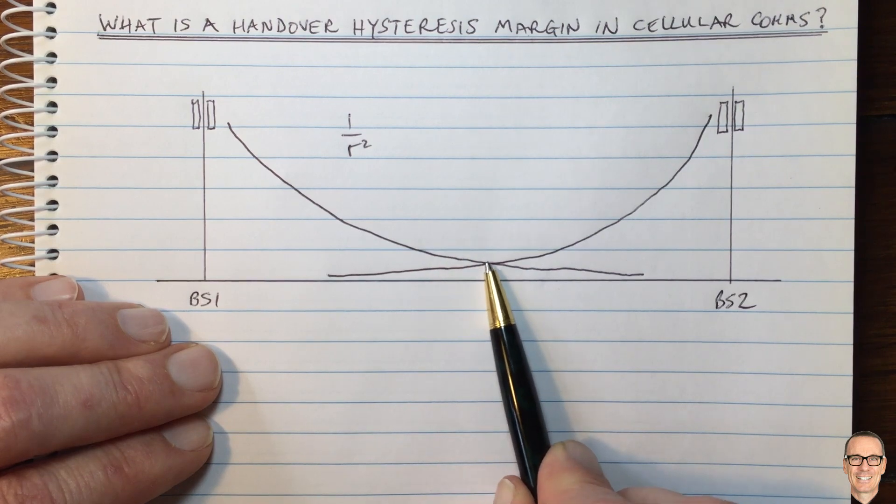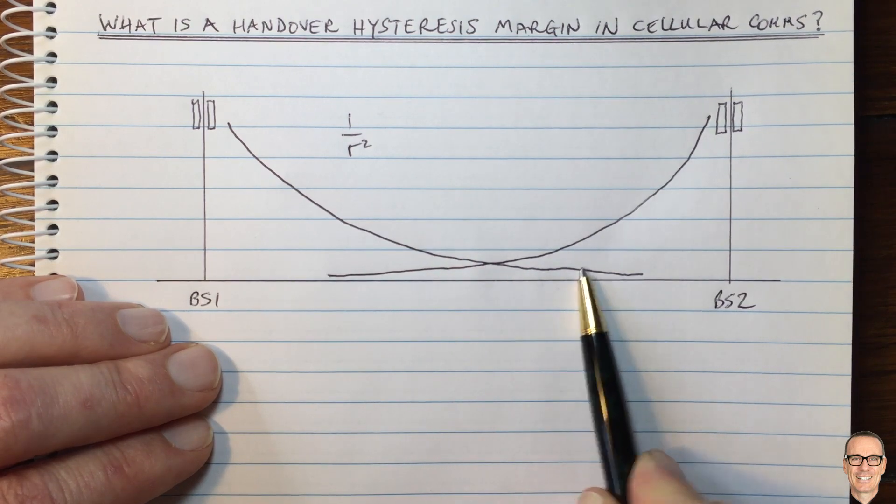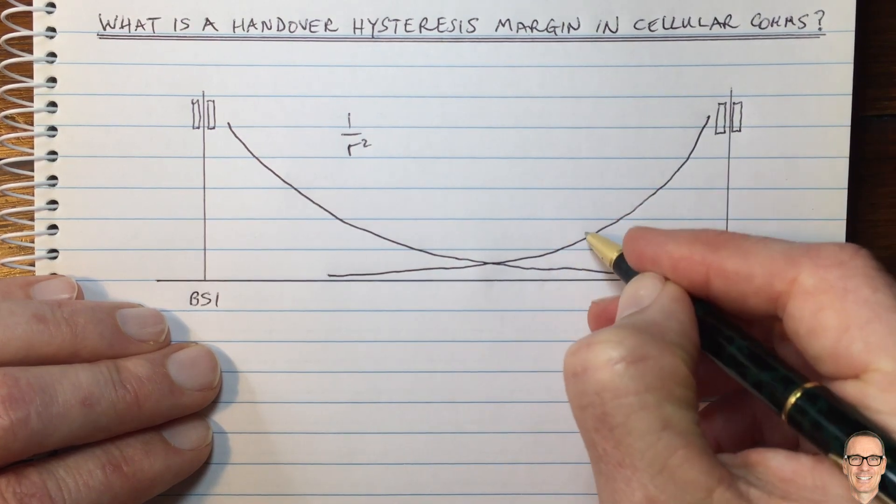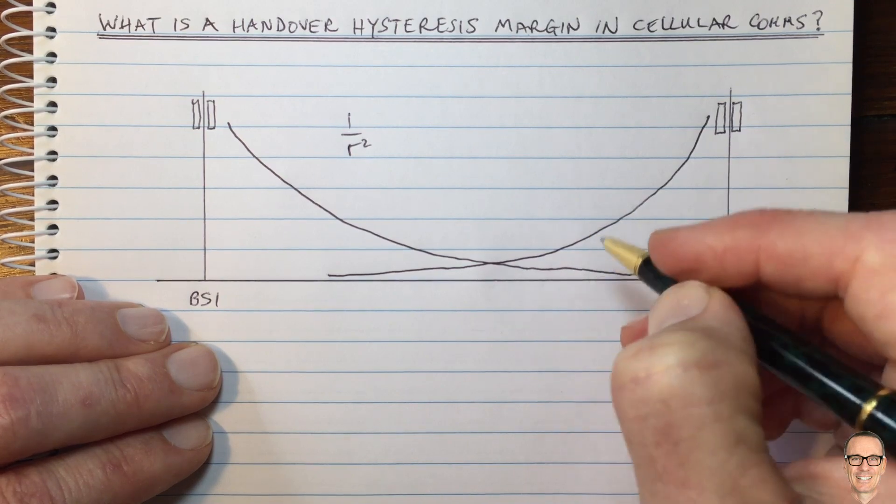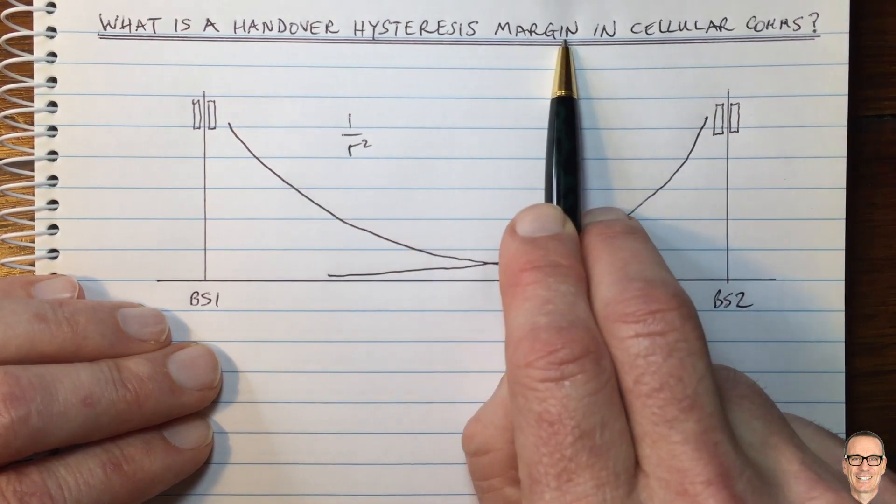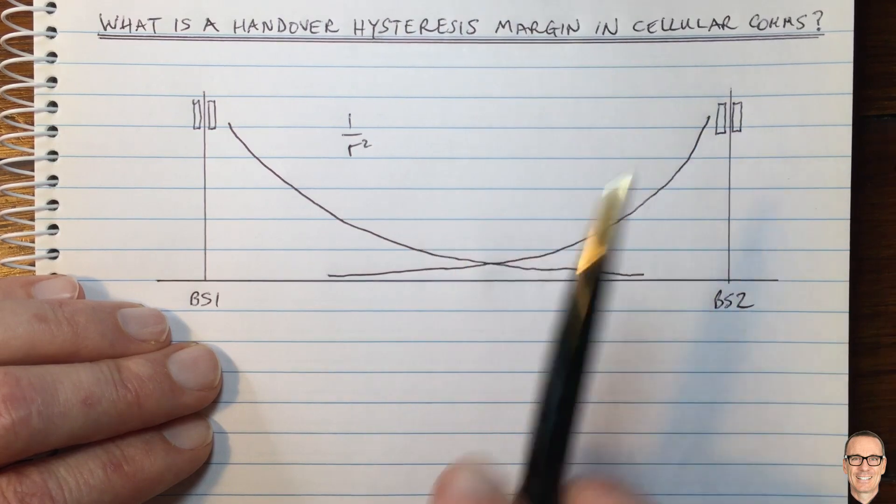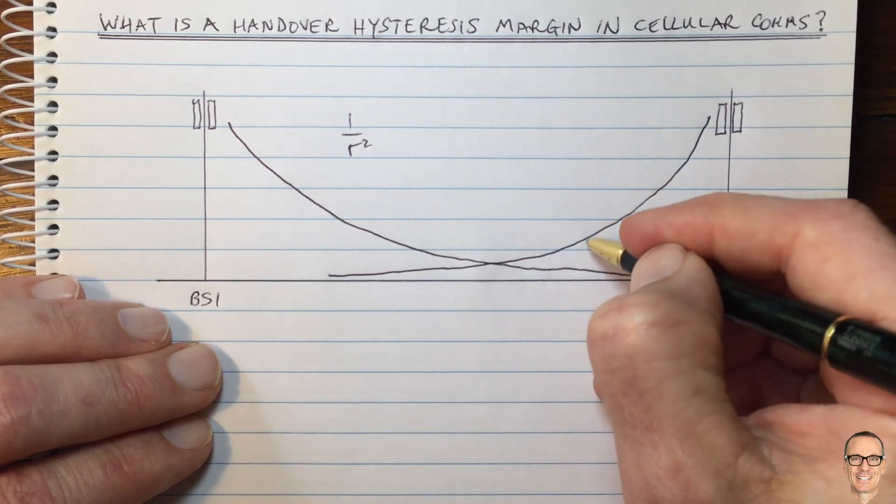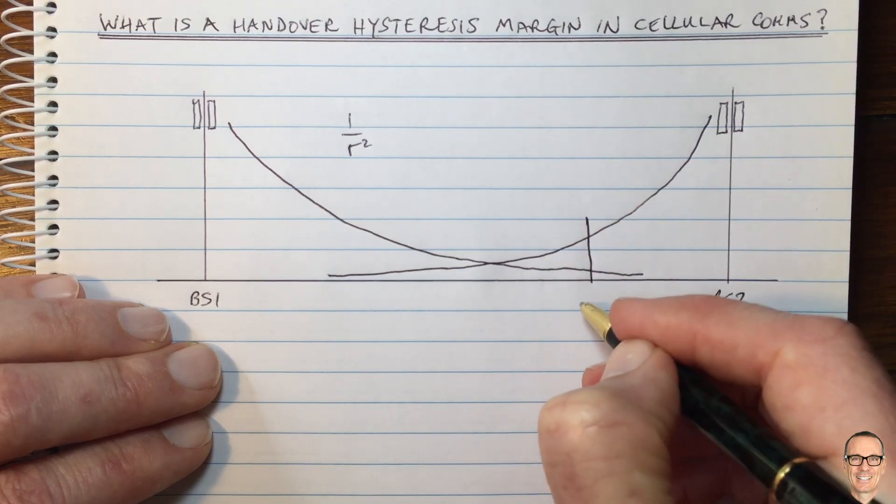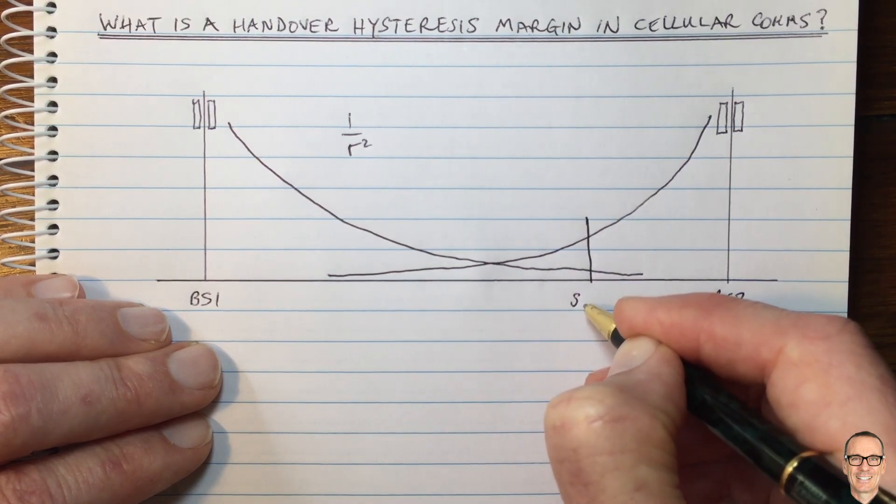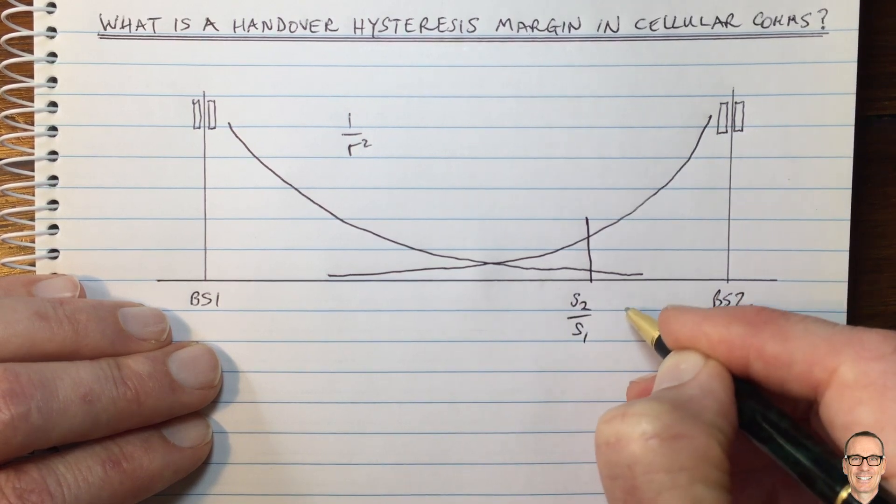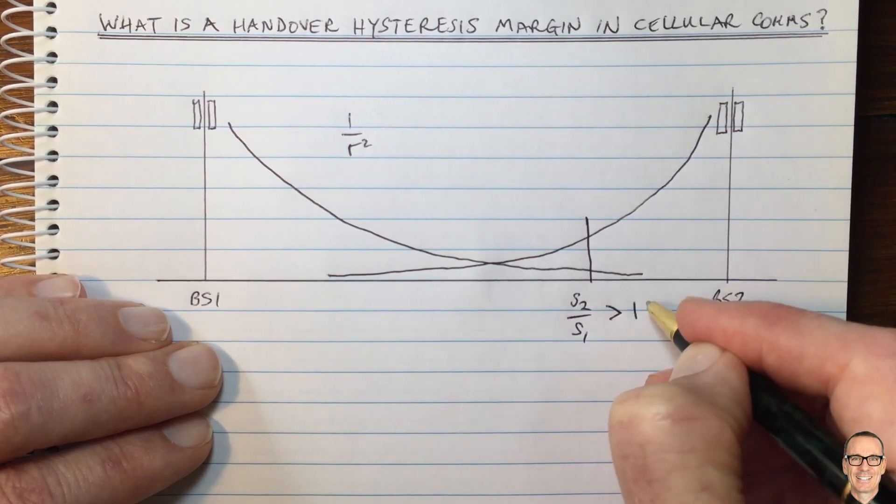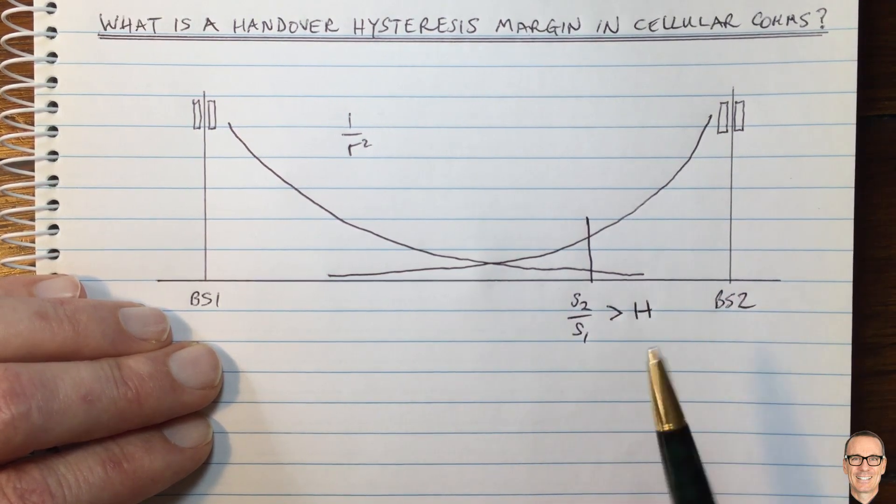So what we do is we wait until we get a certain distance so that the power ratios is higher than a certain margin. And we call this a hysteresis margin because we go past that point. If we're going in this direction, we go up to a point here where the signal from base station 2 is bigger than the signal from base station 1 by more than a hysteresis margin.